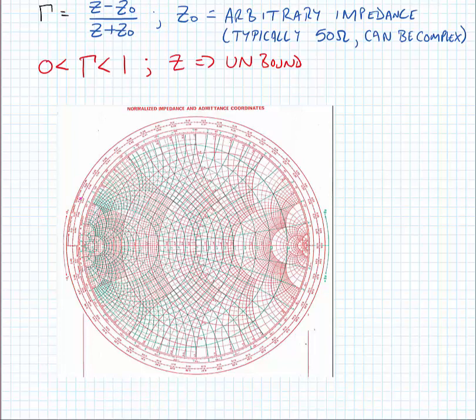So we're going to look at a few points of interest on the Smith chart and the first point of interest is the center of the chart. Normally the center of the chart is where our characteristic impedance z0 is.